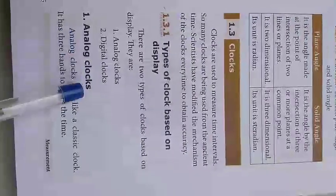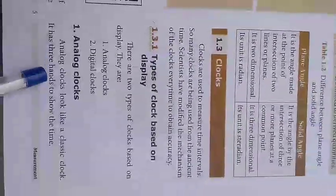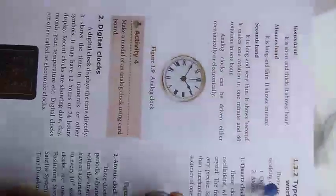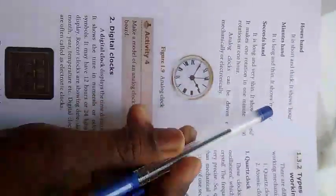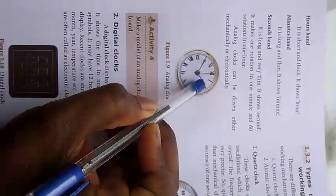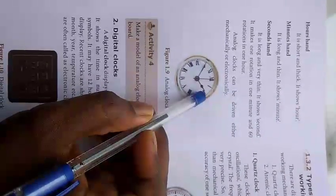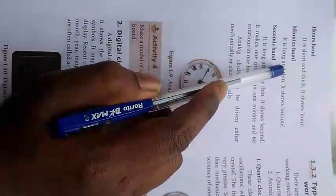Based on display, clocks are classified as analog clocks and digital clocks. Analog clocks look like classic clocks with three hands to show time: the hour hand is short and thick showing hours, the minute hand is long and thin showing minutes.